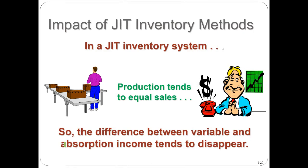Note that there's a trend toward just-in-time inventory, where companies keep as little inventory as possible and produce only when an order occurs. In a just-in-time system, the amount in ending inventory is minimized, and therefore the differences between the two costing methods become much smaller.